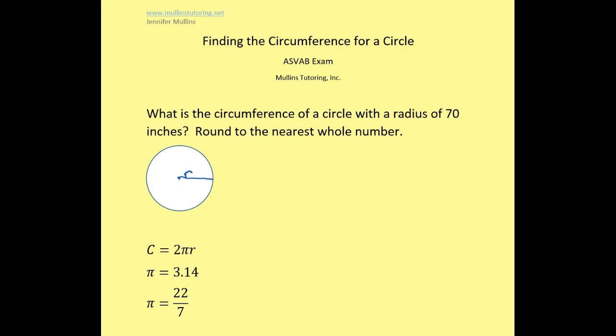What is the circumference of a circle with a radius of 70 inches? Round to the nearest whole number. So I have drawn a picture of a circle with the radius marked, and the radius is just the point from the center of the circle to the exterior of the circle. And when we talk about circumference, we're talking about the perimeter or the outside measurement of the circle.